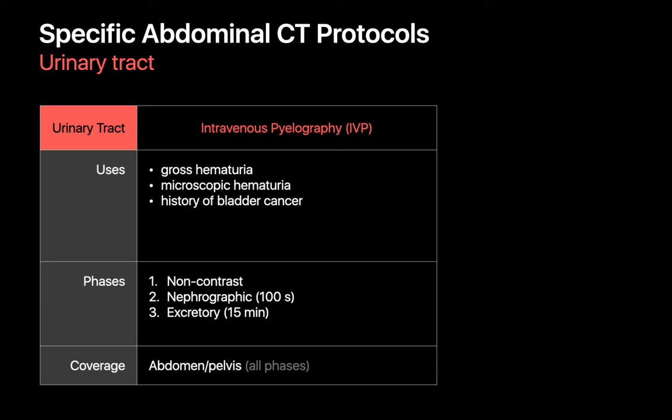The urinary tract protocol is used in situations where we want to do our best to exclude a neoplasm along the lining of the urinary tract. Common indications may include hematuria — gross or microscopic — and urinary bladder cancer history. A non-contrast scan is performed followed by enhanced scans during the nephrographic and excretory phases.